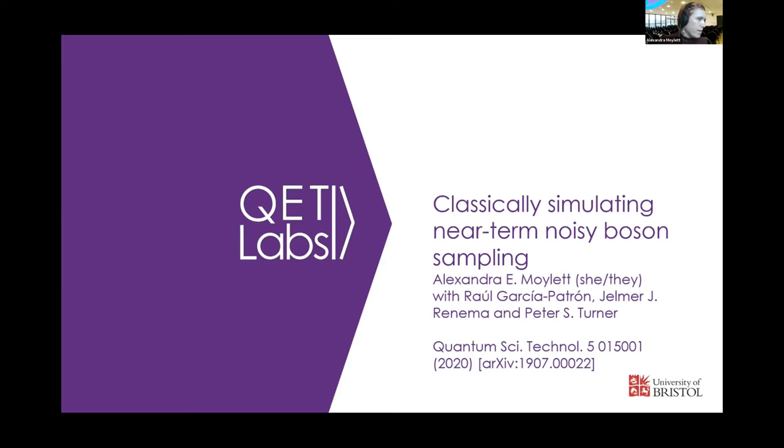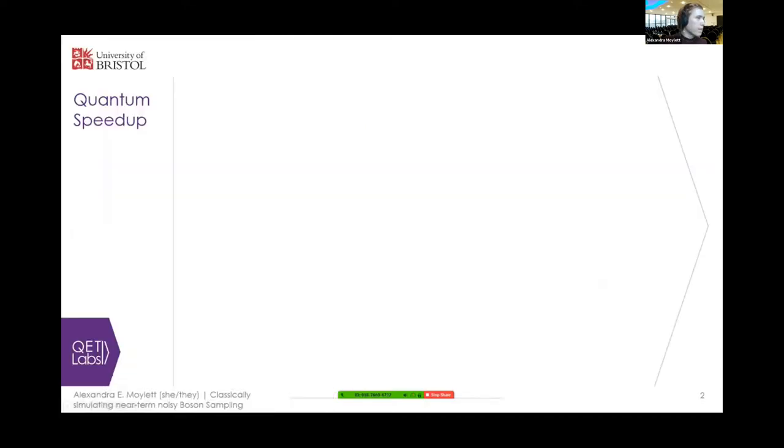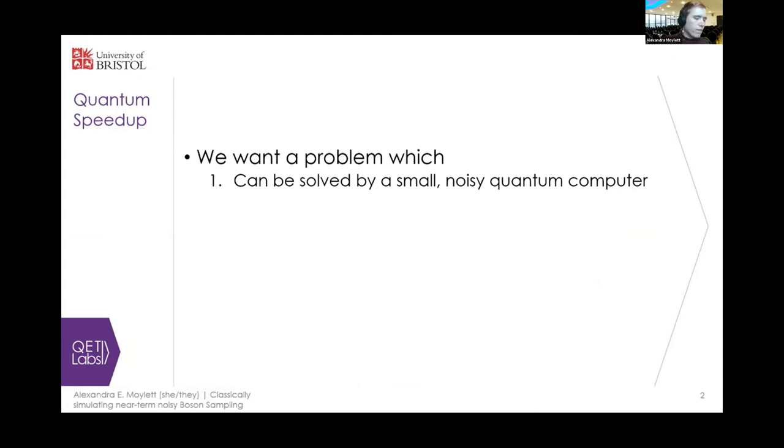So what I am interested in throughout my PhD is the question of a quantum speedup. What I mean by this is I want to find a problem which satisfies three properties. First, it should be solvable by a small noisy quantum computer, the kind of device that we expect to see in the next couple of years. Secondly, it shouldn't be feasibly solvable by a classical computer, whether that's my laptop or a large-scale supercomputer. And thirdly, ideally, we want a problem which is useful as well.